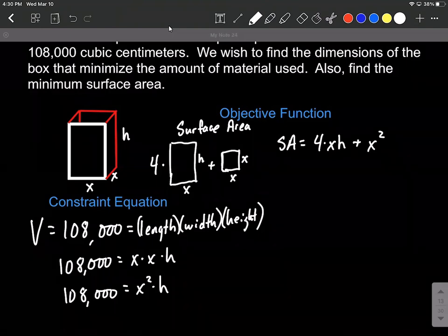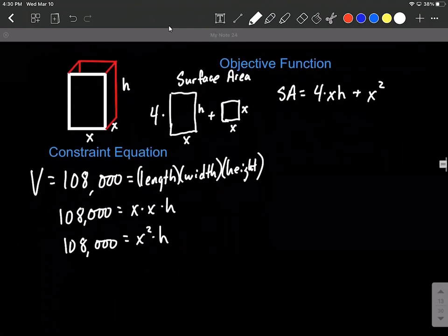To minimize this, you may notice on the right-hand side, we have both X's and H's currently. We're gonna use our constraint equation on the left-hand side, solve that down for one of our variables and plug it in to the surface area function. I think it's gonna be easiest if we choose to solve that left equation down for H. So we'll move the X squared to the other side by dividing. So that gives us H on the right-hand side all by itself.